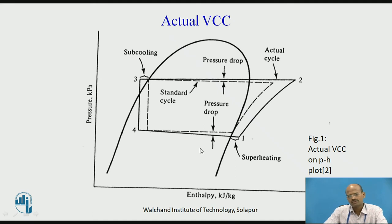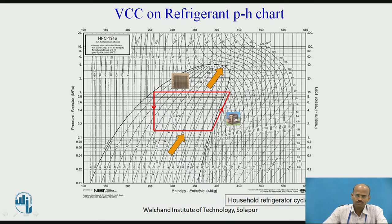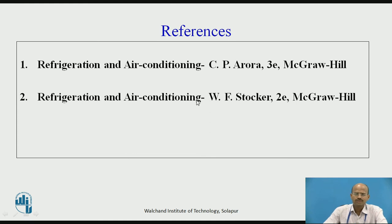This is the actual VCC, and for comparison purposes you can consider the schematic diagram of theoretical VCC. I can represent the VCC on a pH chart: 1 to 2 is isentropic compression, 2 to 3 is isobaric condensation, 3 to 4 is isenthalpic expansion, and 4 to 1 is the refrigerating effect. To obtain the actual VCC, measure the actual pressures and temperatures, locate the points at inlet to compressor, outlet of compressor, outlet of condenser, and inlet to evaporator, then simply join those points. For further study, you can refer to Refrigeration and Air Conditioning by CP Aurora and WF Stoker. Thank you.